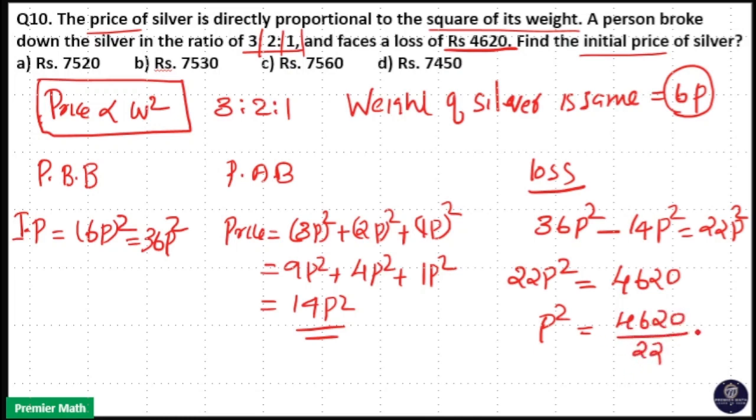46 by 22 is equal to 2, 22 by 22 is equal to 1.